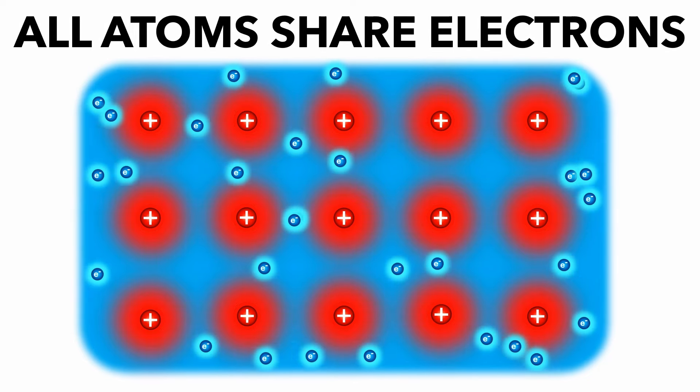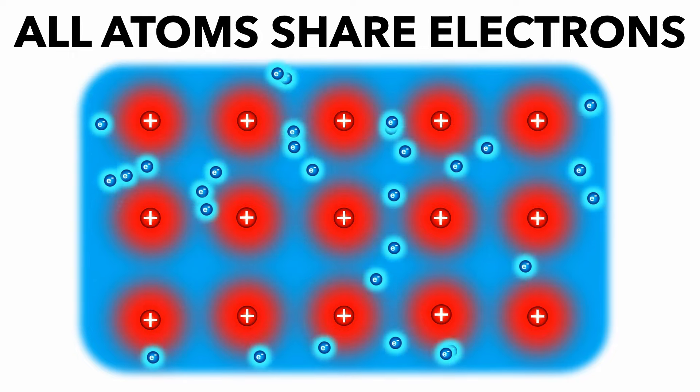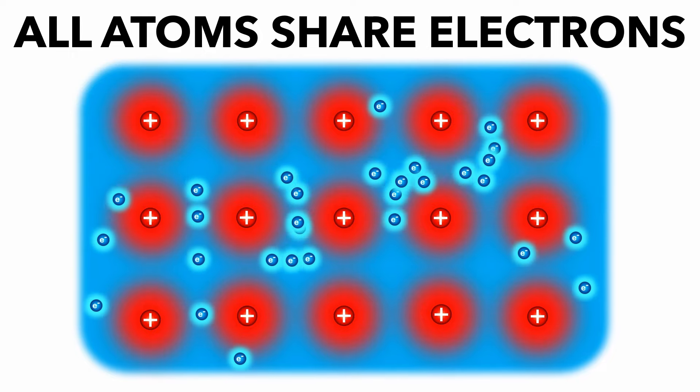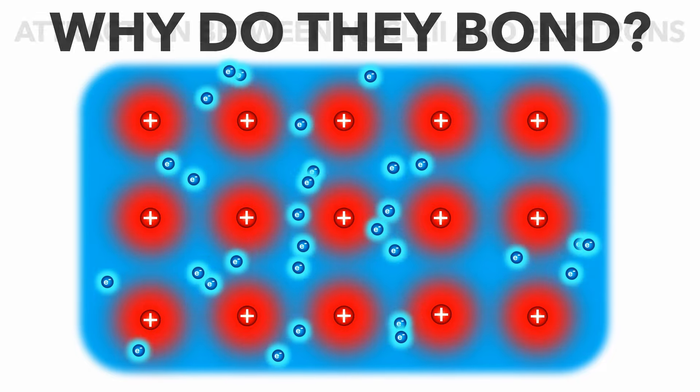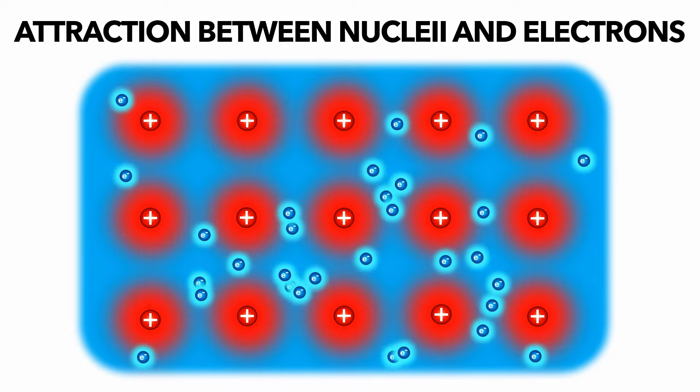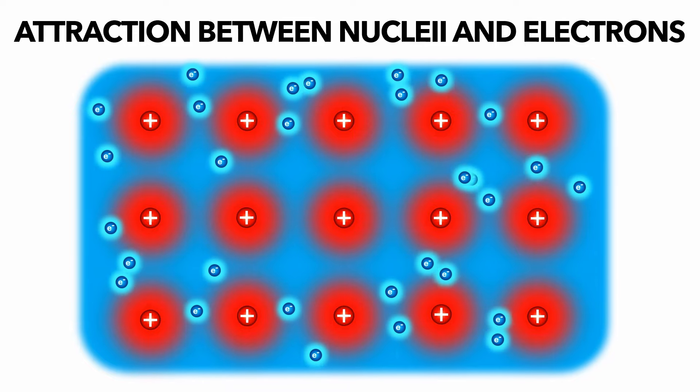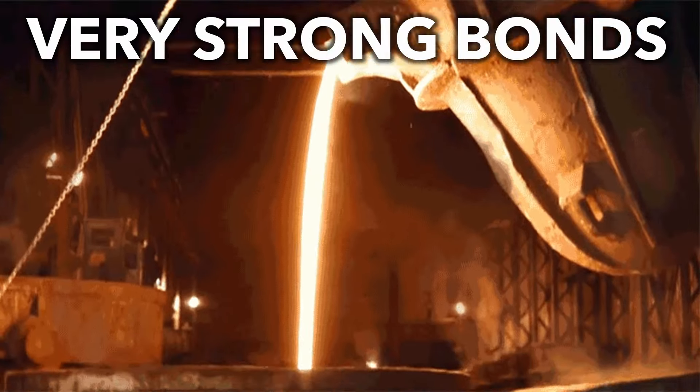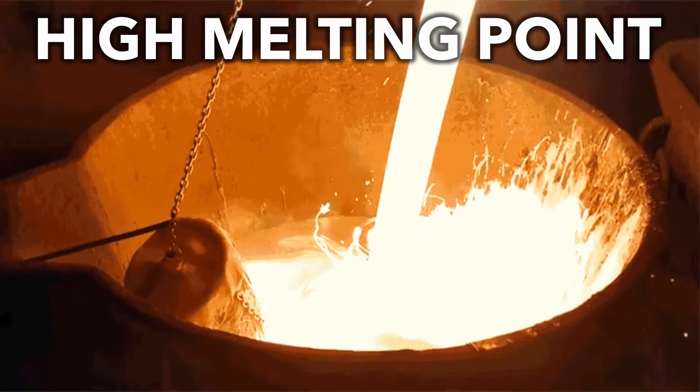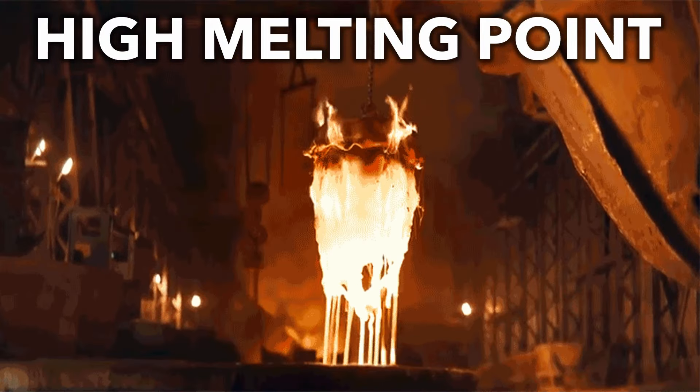The electrons form a sea of delocalised electrons, which are free to roam throughout the giant lattice. Where does the bonding come from? Well, the positive nuclei are all held together by the sea of delocalised electrons, like a strong glue. The bonding is very strong, meaning that metal generally has very high melting points.